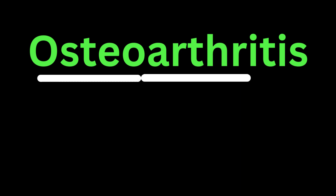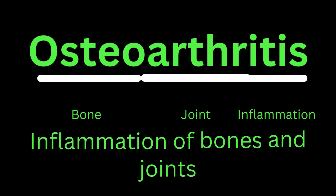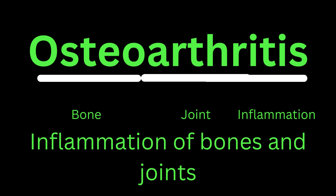Let's look at the word osteoarthritis. If we break this word, we have osteo, arthro, and itis. Osteo refers to bone, arthro refers to joint, and itis is a suffix that is added to indicate inflammation. Hence, osteoarthritis is associated with inflammation of bone and joint.